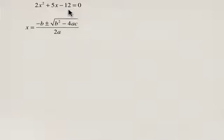First thing we have to do is identify a, b, and c. So a here is 2, b is 5, and c is -12.